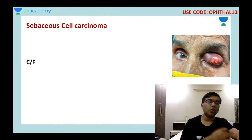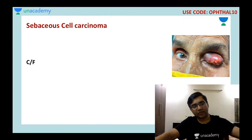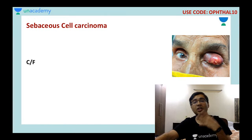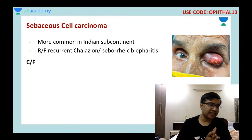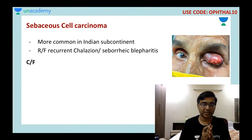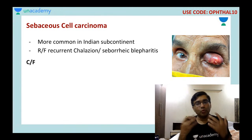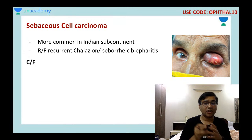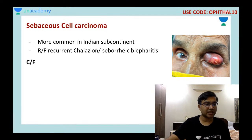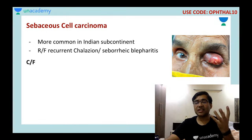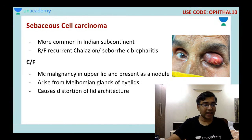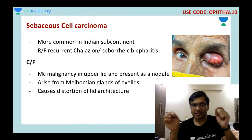The next tumor, most important for exams, is sebaceous cell carcinoma. This is more commonly seen in the Indian subcontinent. You would get a 45-year-old female with a mass who also says she has complaints of recurrent chalazion — she has been operated for recurrent chalazion or there is recurrent blepharitis. When you see this tumor, there is a mass on the upper eyelid with destruction of lid architecture. You would have madarosis — loss of eyelashes — poliosis, and destruction of the margins. You can see these yellowish spots — meibomian gland inflammation. They originate from the meibomian glands of the eyelids.